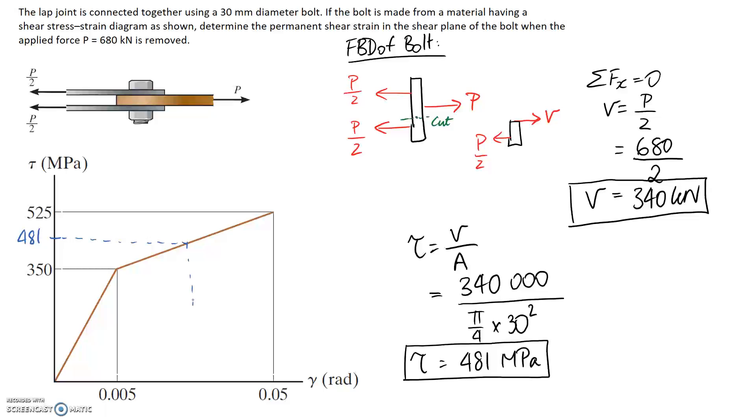So we need to work out what that means in terms of our shear strain, which we're going to use the symbol gamma for. Okay, so we should be able to do this because the diagram is approximated to be a straight line here, so we should be able to find out where this point sits on the straight line based on the fact that we're given two other points that sit on the straight line.